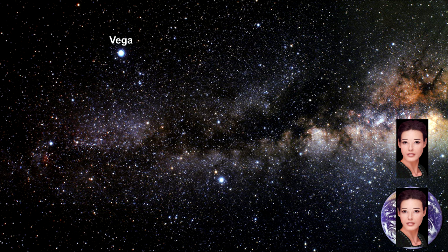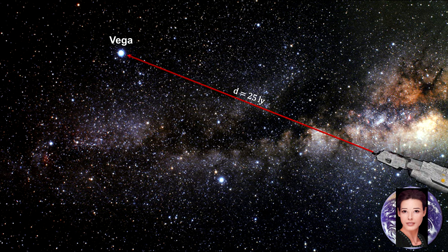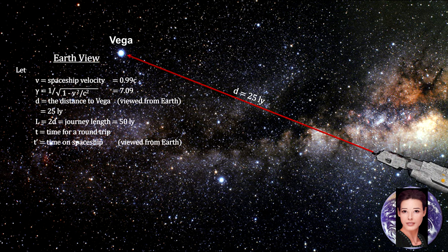Suppose two 20-year-old twins start out together on Earth. One of them gets into a spaceship for a trip to Vega, traveling at 99% of the speed of light.